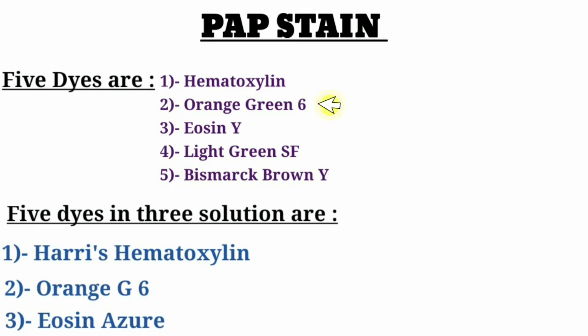Orange G6 stain is used for matured and keratinized cells. Eosin Y dye gives a pink color and stains the cytoplasm of acidophilic cells, also giving them a pink color.